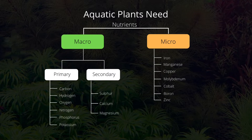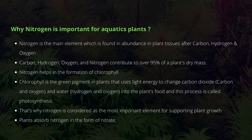Micronutrients consist of iron, manganese, copper, molybdenum, cobalt, boron, and zinc. In this video we will be covering in detail only one element, and that's nitrogen. Before we jump into the discussion, I want to mention that I will be using the terms nitrogen and nitrates throughout this video. Basically, I will use nitrates because we supply nitrogen in the aquarium in the form of nitrates.